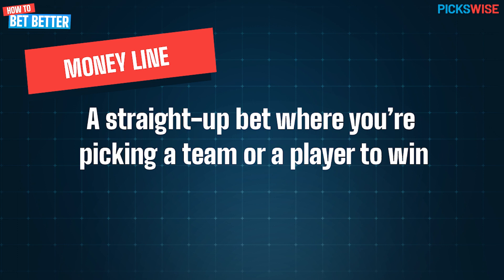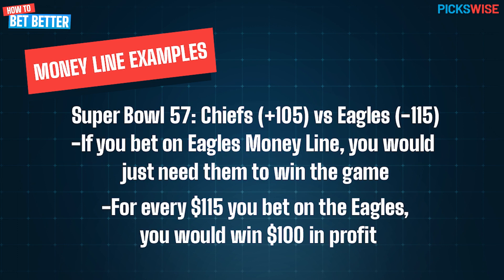Of course, we'll still break it down with a couple of examples, starting off with the Super Bowl. The Eagles were minus 115 on the money line heading into the game, and the Chiefs were plus 105. This means that if you bet on the Eagles money line at minus 115, you would just need them to win the game for your ticket to cash. The minus 115 means that for every $115 you bet, you'd win $100 in profit.